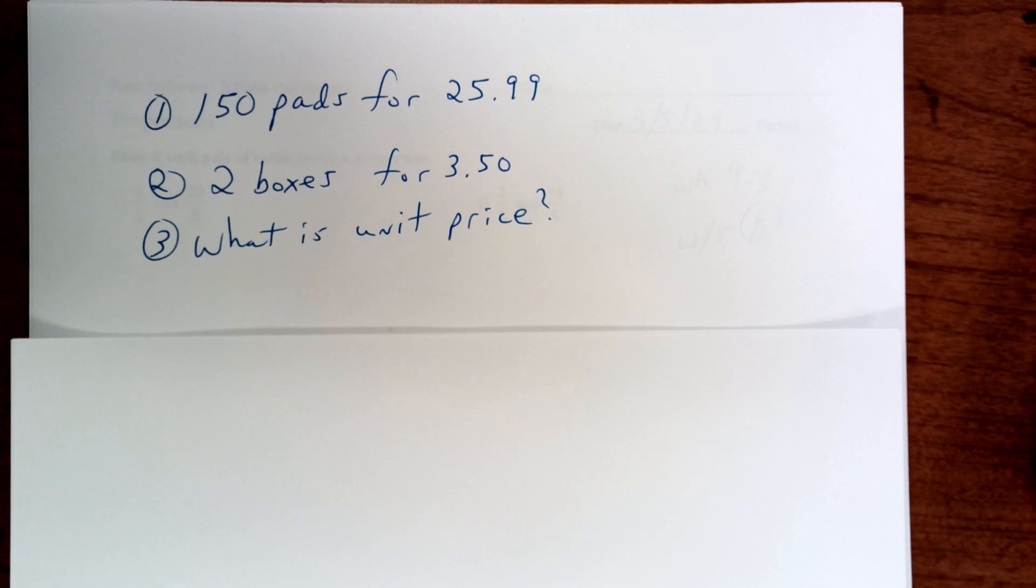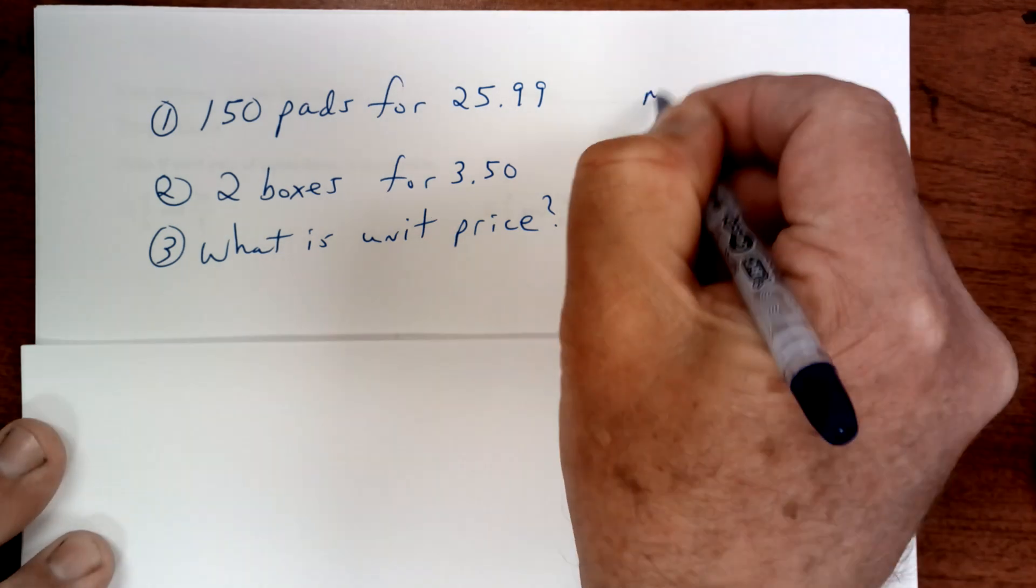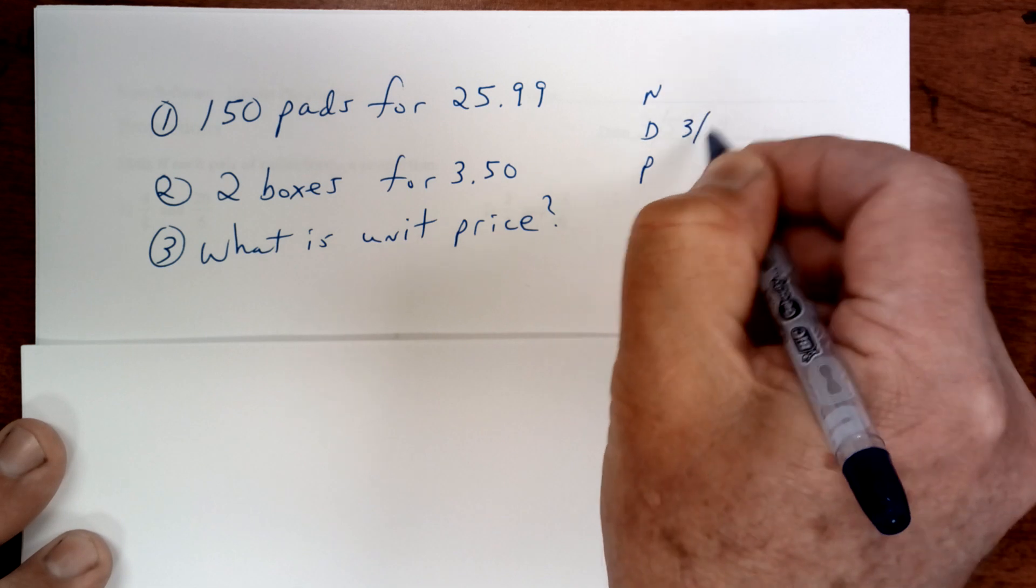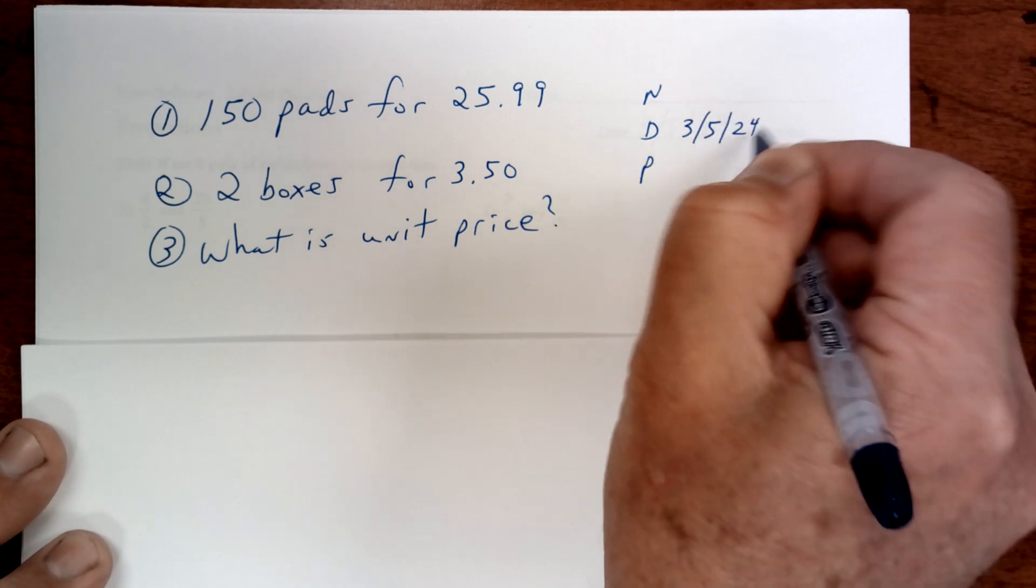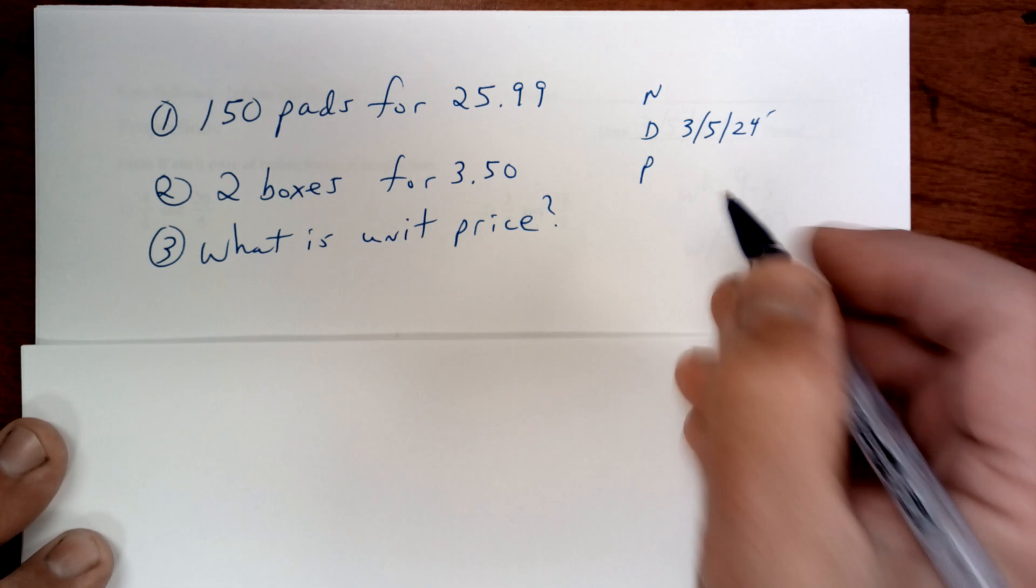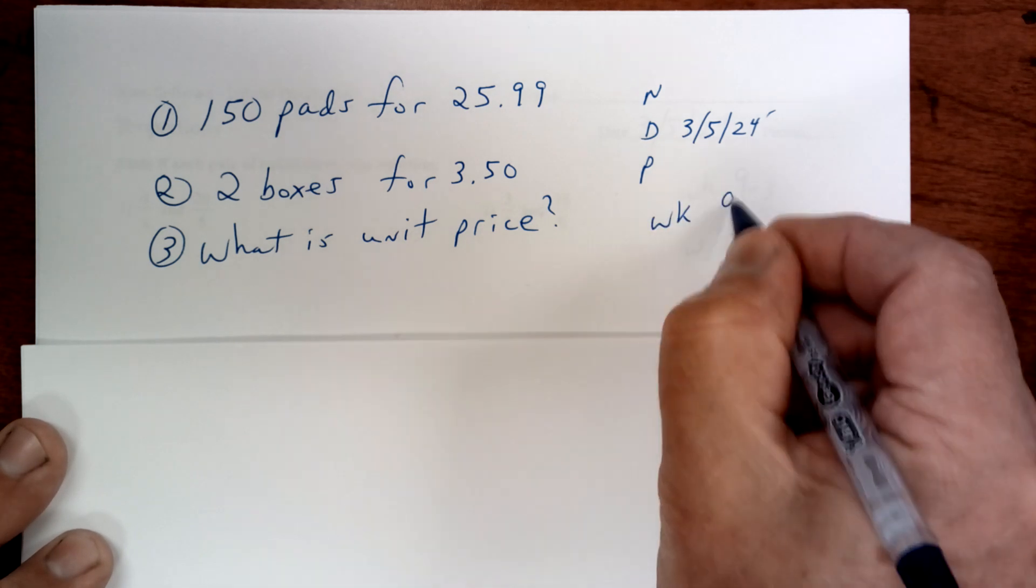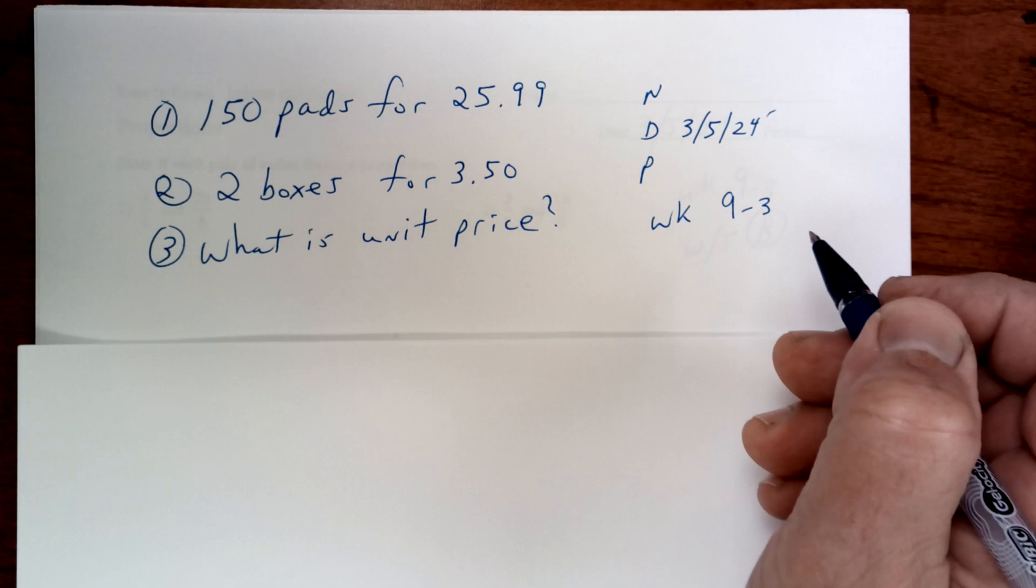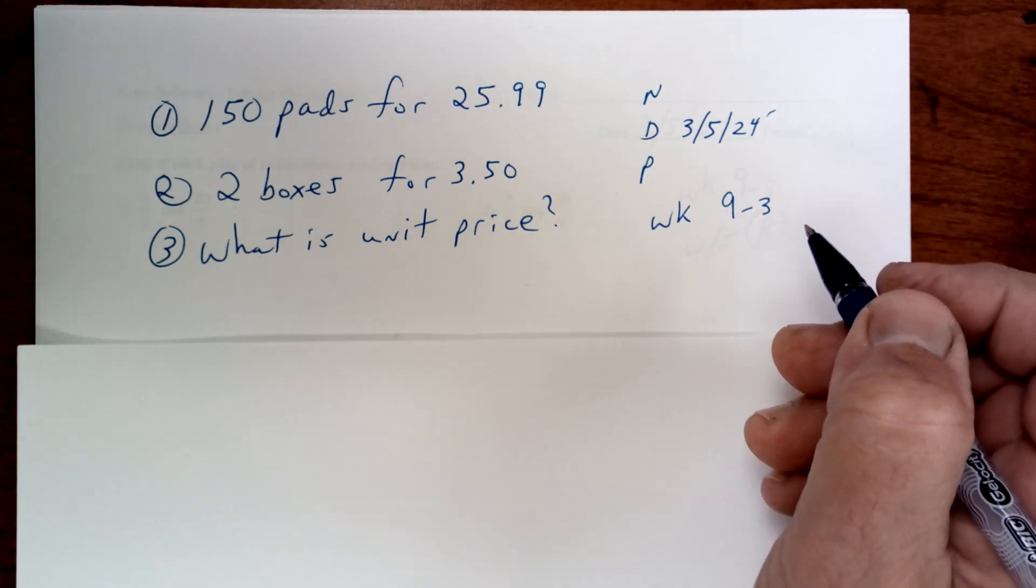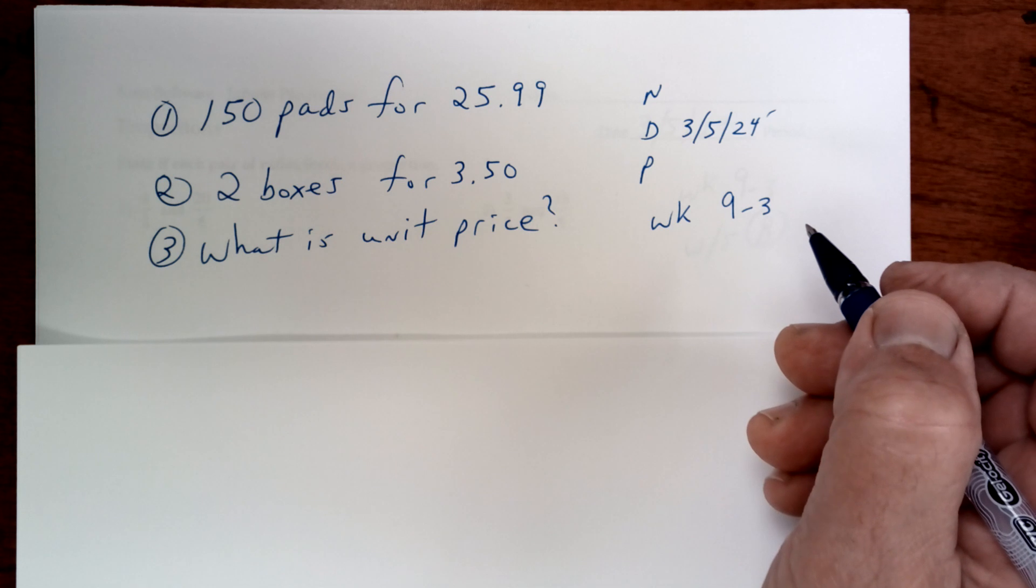Okay, hello and good morning. Let's take a look at the bell work here. Name, date, and period. Today is 3/5 and this is week 9-3. If you get 150 pads for $25.99, how much is the unit price? How much does one cost?